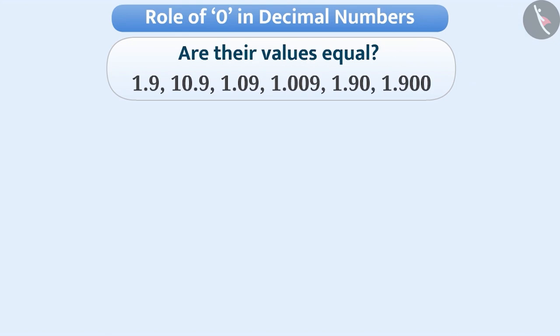Let's find out the correct answer. Zero has a greater importance in decimal numbers. It is often used as a placeholder. That means, with the help of zero, digits are written at their correct places.